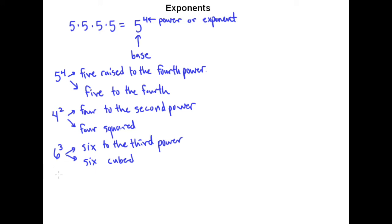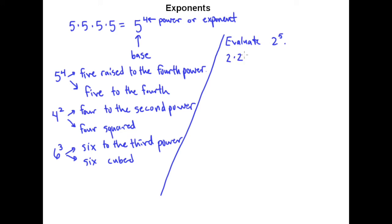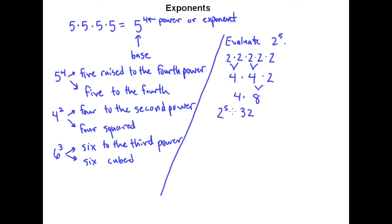Now if you're asked to evaluate a particular exponential expression — for example, 2 to the 5th — what we're going to do is write out what 2 to the 5th means: multiply 2 by itself so that there are a total of five 2's in the expression. Because of the associative property of multiplication, you can start multiplying whatever you find convenient. Multiply the first two 2's to get 4, and the next two 2's to get 4, leaving the last 2. Then multiply 4 and 2 to get 8, and 4 and 8 to get 32. So 2 to the 5th equals 32.